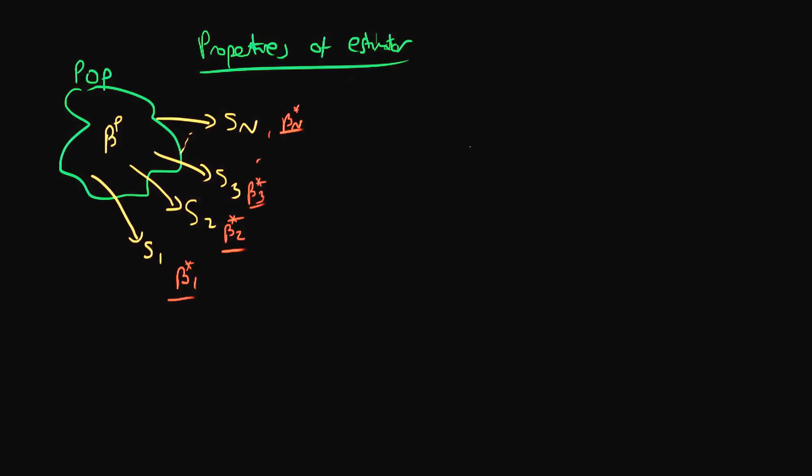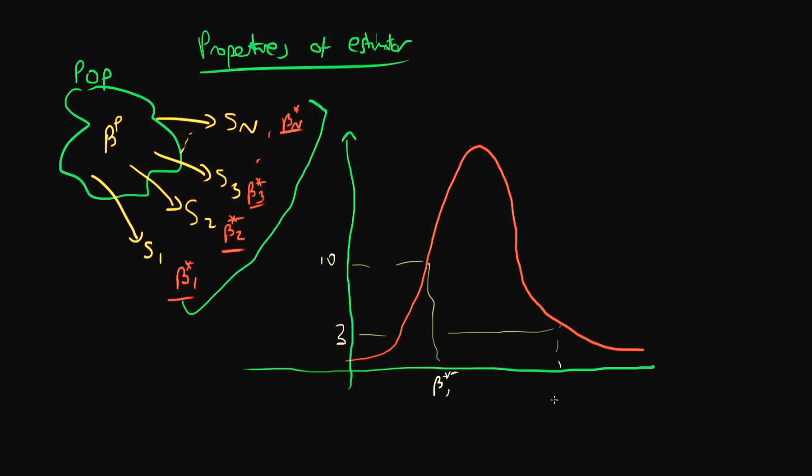Note that each of these individual estimates which we get by applying our estimator function to each of the sample data is not going to be exactly equal to the population parameter due to sampling error. That's because essentially each of the samples isn't quite representative of exactly what's going on in our population. So perhaps we get maybe 10 instances of beta 1 star, we get maybe only three instances of beta 2 star for example. This is a frequency plot of all the different values of beta star which we have got from applying our estimator to repeated samples.